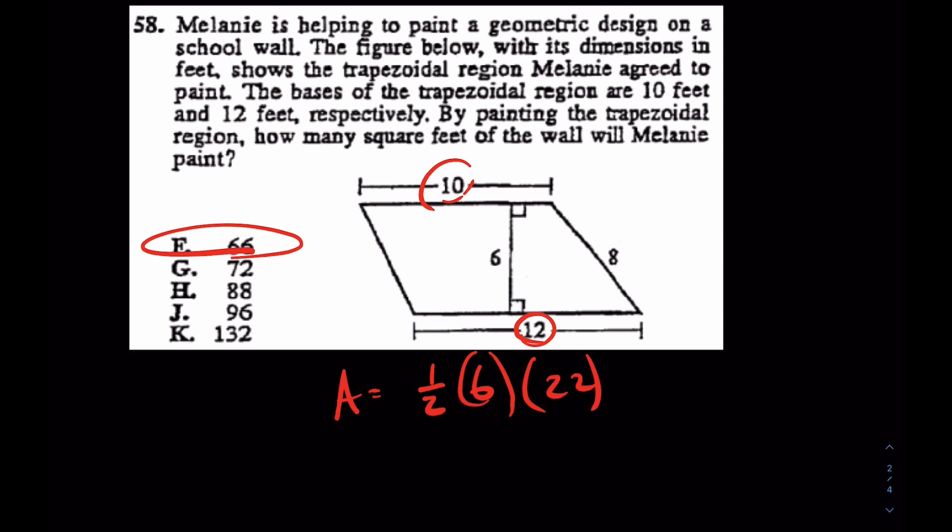The big thing to watch out for is this slant height here. This is never, ever used in any area or any kind of formula. This is the slant height, whereas this is the true height. This is H. So watch out for that.